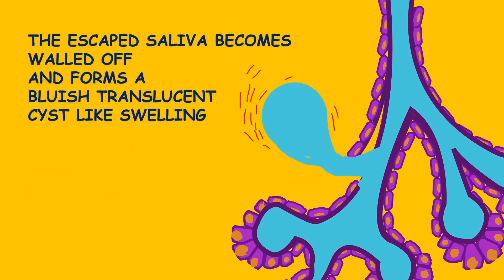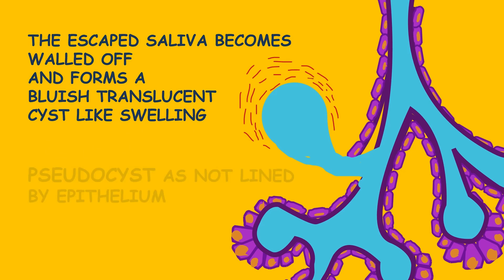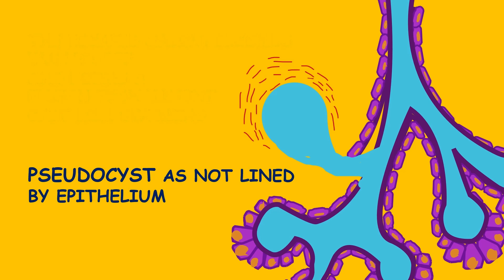The escaped saliva becomes walled off and forms a bluish translucent cyst-like swelling. This cyst-like swelling is basically a pseudo-cyst, as it is not lined by epithelium.